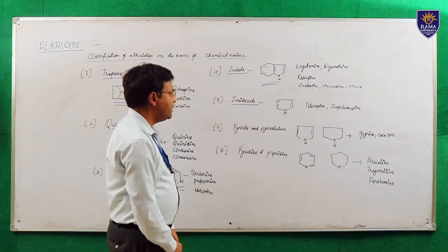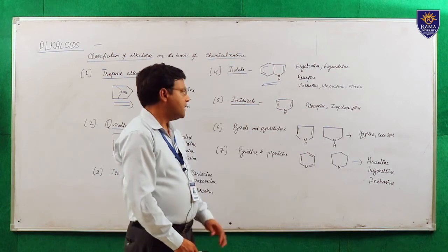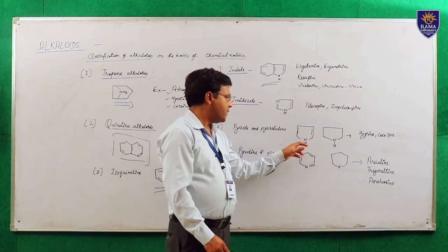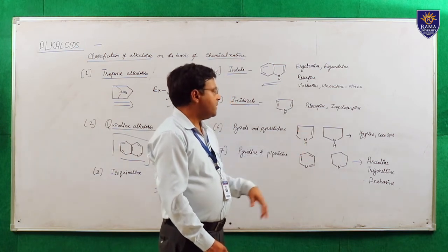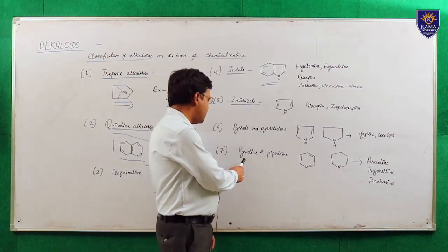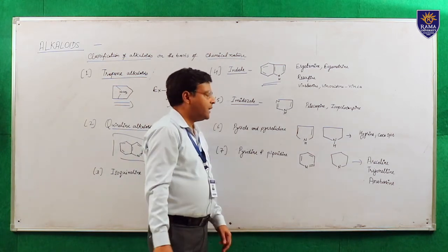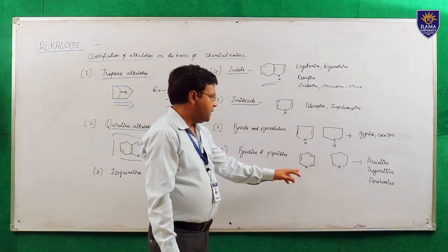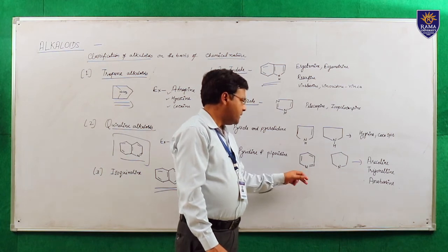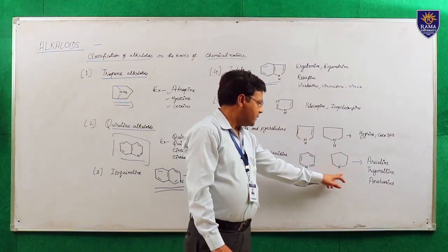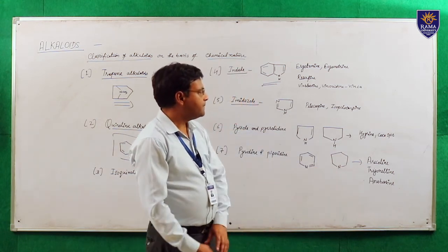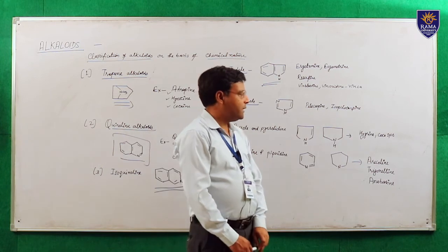Pyrrole and pyrrolidine alkaloids contain this type of basic moiety, and examples are hygrine from coca species. Another type is pyridine and piperidine alkaloids — pyridine type contains a pyridine basic moiety and piperidine type contains a piperidine basic moiety. Examples are arecoline, trigonelline, and anabasine.